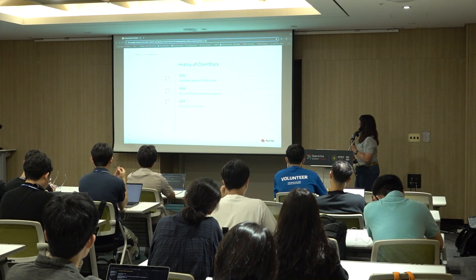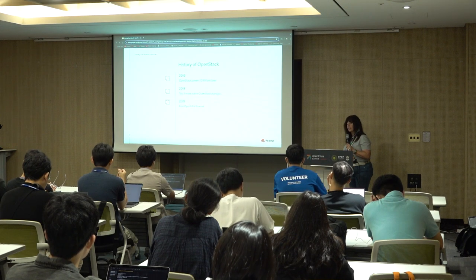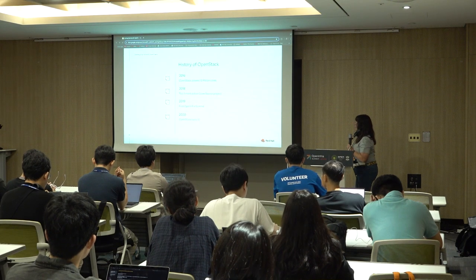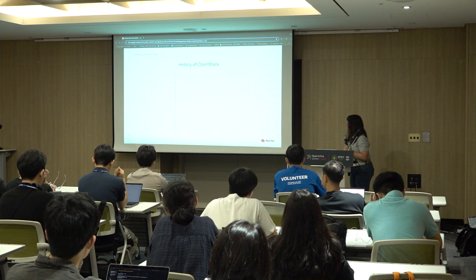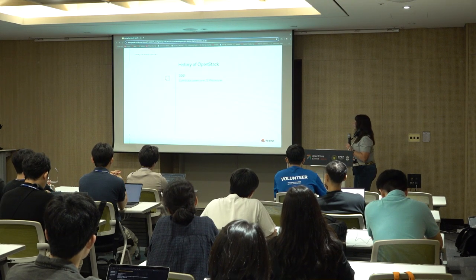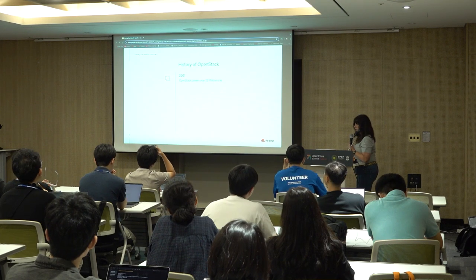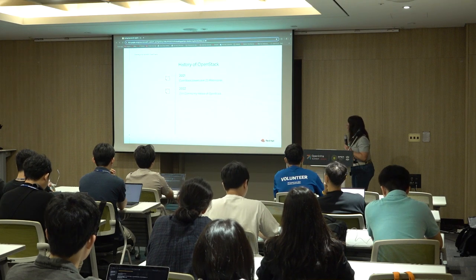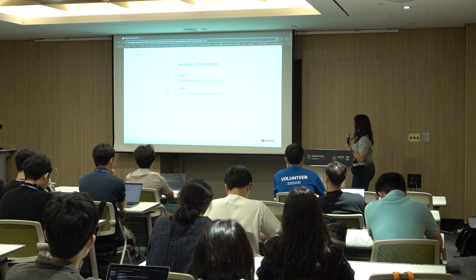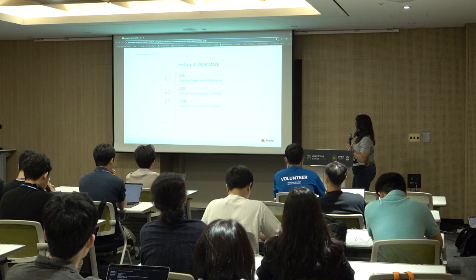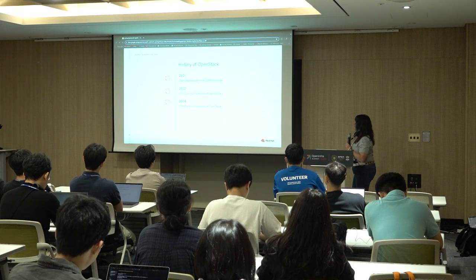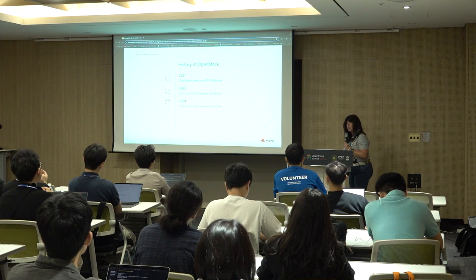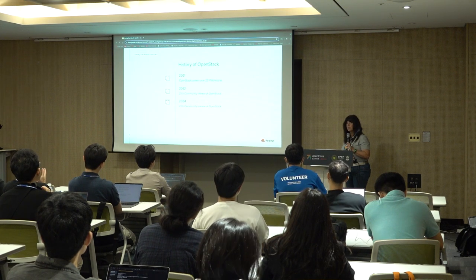In 2019, there was the first OpenInfra Summit, which took place in Vancouver. And in 2020, OpenStack turned 10. In 2021, we're now over 25 million cores. Also, 2022 was the 25th community release of OpenStack, and 2024 was the 29th. In 2021, we also renamed from the OpenStack Foundation to the Open Infrastructure Foundation, also referred to as OpenInfra.